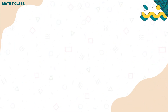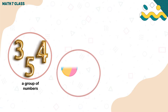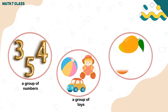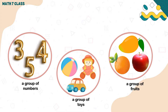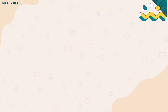Okay, let's answer the activity. We have here a group of numbers, next a group of toys, and lastly a group of fruits. For a group of numbers we're going to name these as Set A, for a group of toys as Set B, and lastly for a group of fruits as Set C. Did you get the same answer as mine? If yes, congratulations! If not, don't worry — you will learn more as we go further with our lesson.